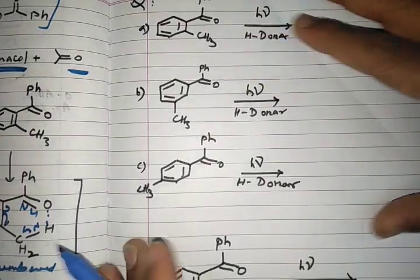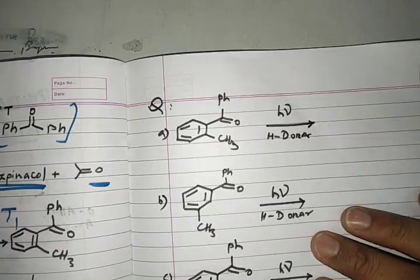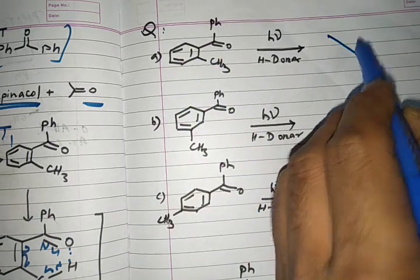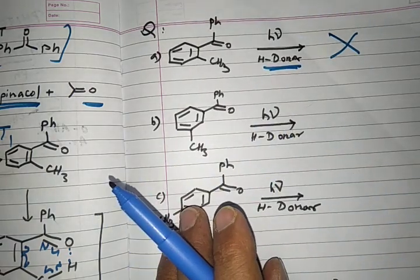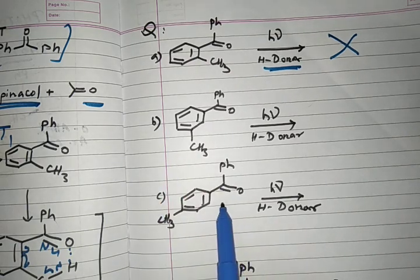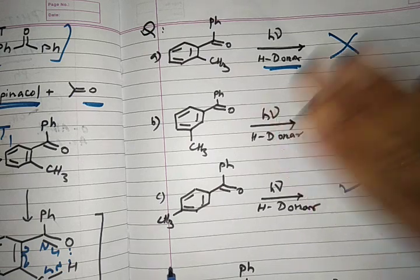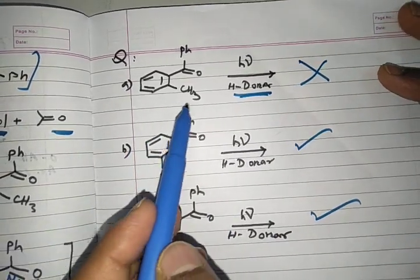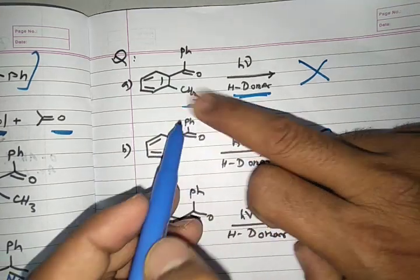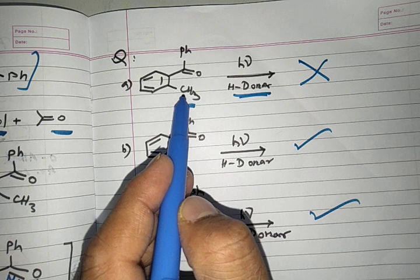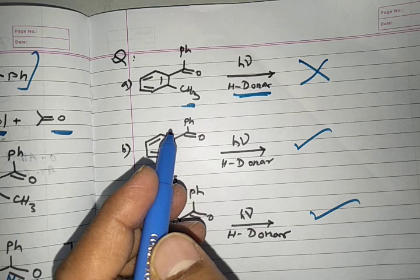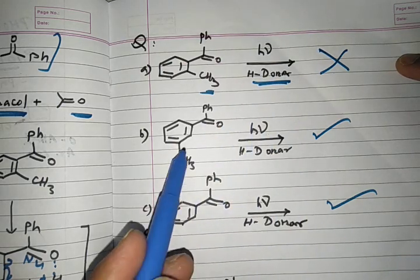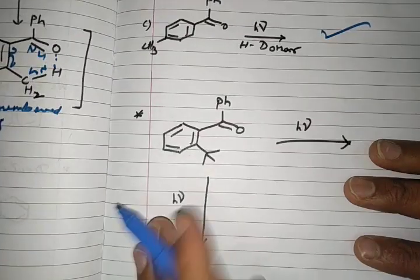Another question type presents three examples. Ortho-methyl benzophenone does not give photo reduction product in the presence of a hydrogen donor such as secondary alcohol or cumene, while meta- and para-methyl benzophenone do give the benzophenacol photo reduction product. The reason is that the ortho methyl group provides benzylic hydrogen, making photoenolization the dominant reaction over photo reduction.